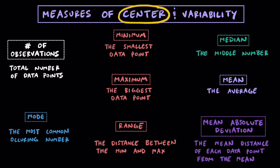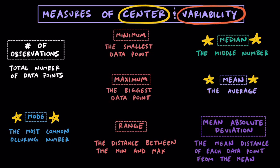From these eight different concepts, three of them represent measures of center: we have mode, median, and mean. On the other hand, two of these concepts represent measures of variability: we have range and mean absolute deviation, or MAD for short. Now that we've done a little overview, let's get into some more details.